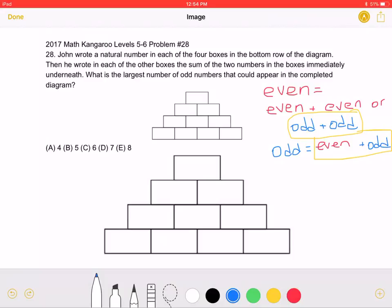Let's start by establishing that an even number can be equal to the sum of two even numbers or the sum of two odd numbers. Because we want to maximize the number of odd numbers, we want each even number to be written as a sum of two odds.